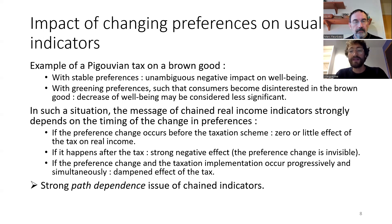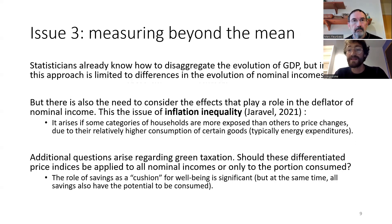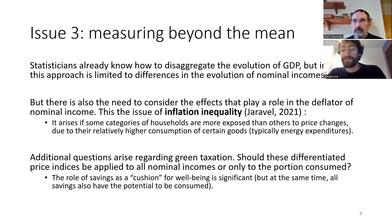The key message here is that the message of our indicators depends on the timing of the change in preferences — what we call an issue of path dependence. Conceptually, this is problematic because in all three cases of preference change, the situation at the end is exactly the same: same preferences, same prices — yet the indicators give three different messages. This is a property we usually don't want our national statistics to have. Marc will talk later about how to deal with this issue.